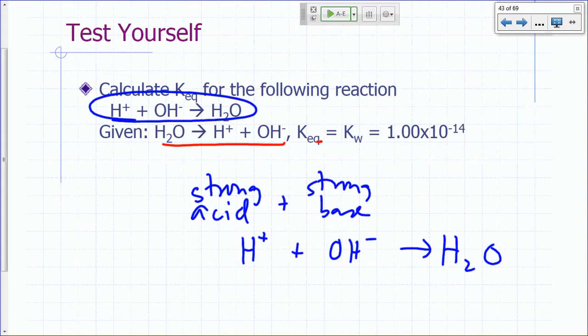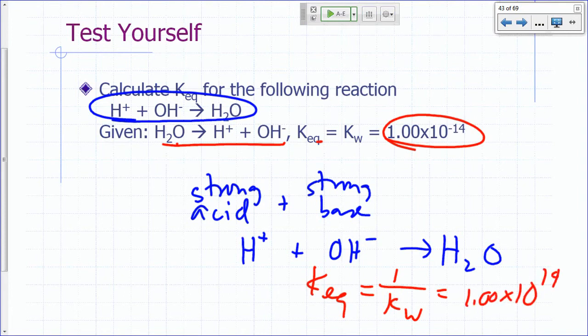But you'll realize that this is just the opposite of the auto ionization of water. So KEQ for the auto ionization of water is 1 times 10 to the negative 14. So what's the KEQ for this one? If you flip it, this is just going to be 1 over KW, which is going to be 1 over 1 times 10 to the negative 14. So that's going to be 1.00 times 10 to the 14.